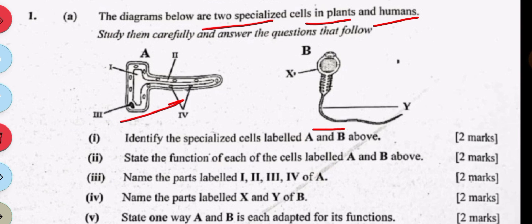And then B is a sperm cell. The second question says state the function of each of the cells labeled A and B above.